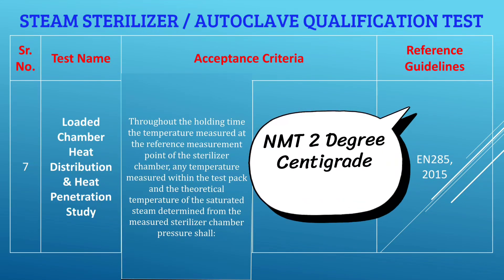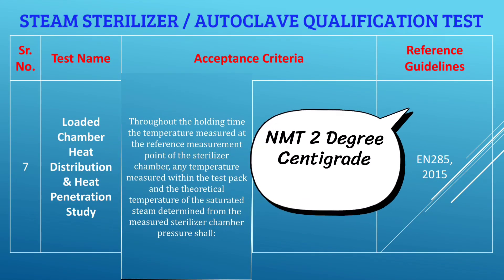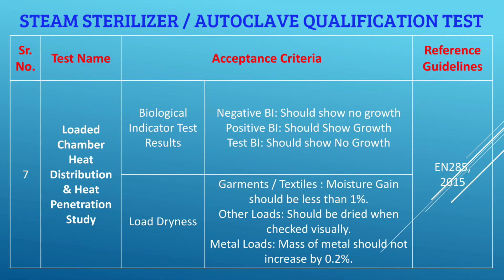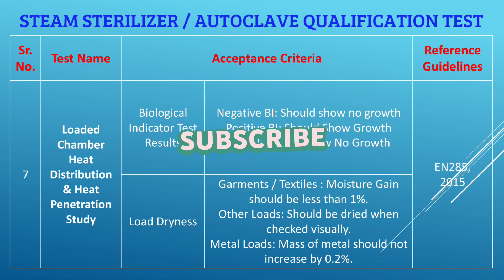Throughout the holding time, the temperature measured at the reference measurement point of the sterilizer chamber, any temperature measured within the test pack, and the theoretical temperature of saturated steam determined from the measured chamber pressure should not differ by more than 2°C. Biological indicator test results: negative BI should show no growth, and positive BI should show growth. For load dryness, moisture gain in garments or textiles should be less than 1%, other loads should be dry when checked visually, and metal load mass should not increase by more than 0.2%, as per EN 285.